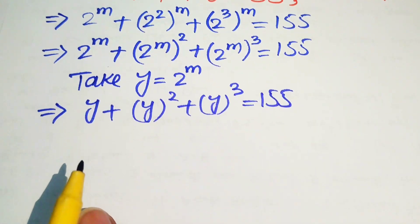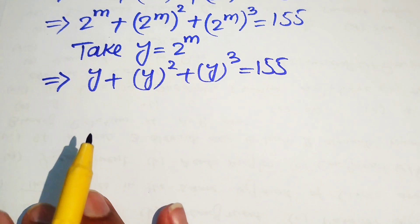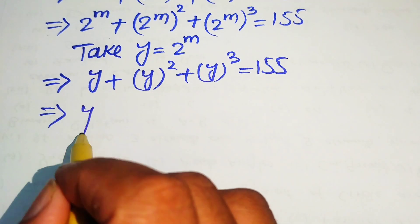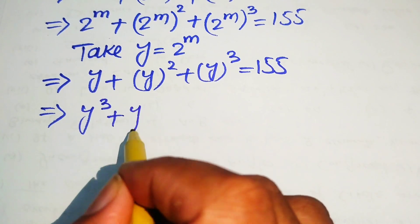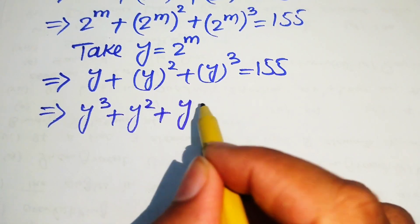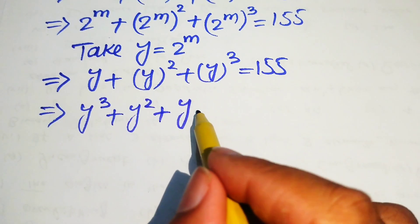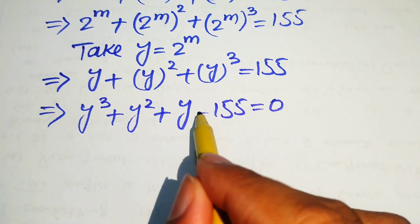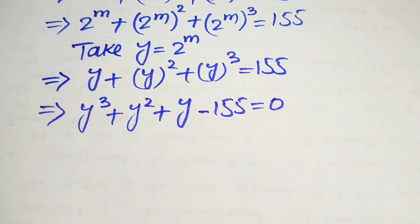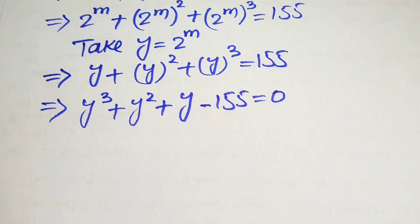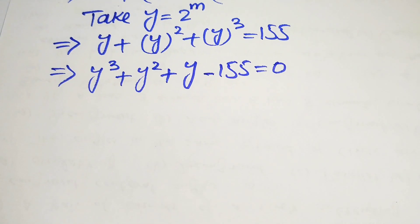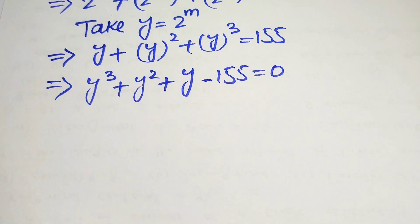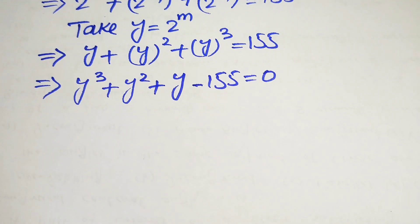In the next step, we rearrange the terms and write it as y cubed plus y squared plus y, then move 155 to the left-hand side so it becomes minus 155, equals 0. This equation is now cubic in the variable y.